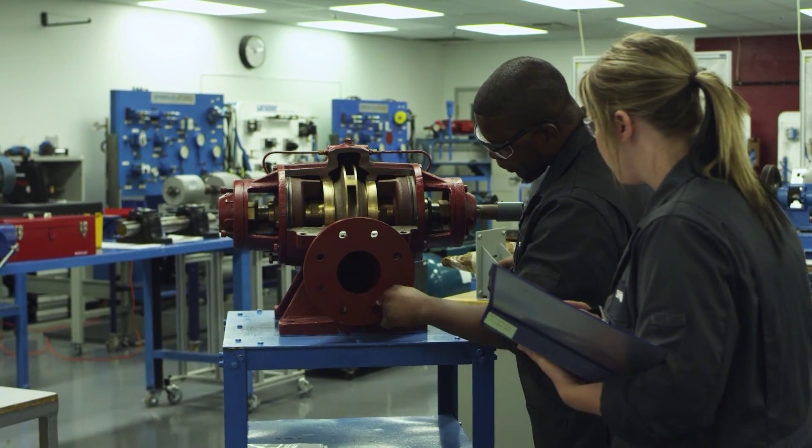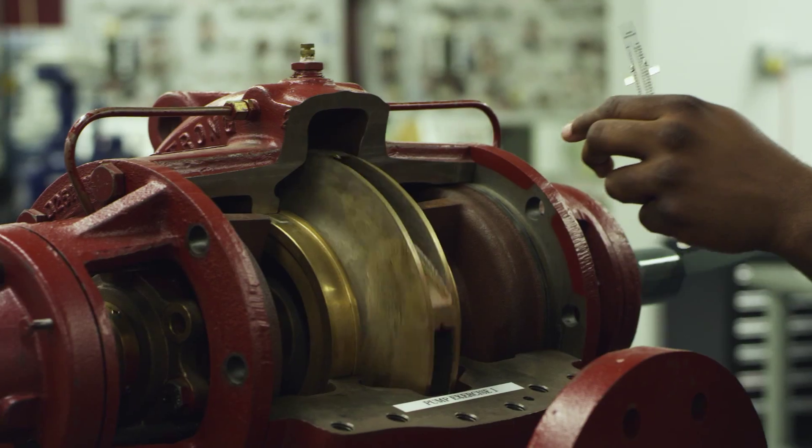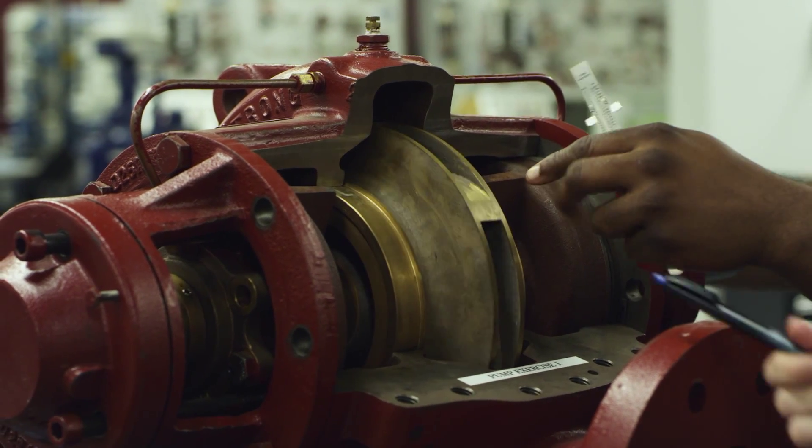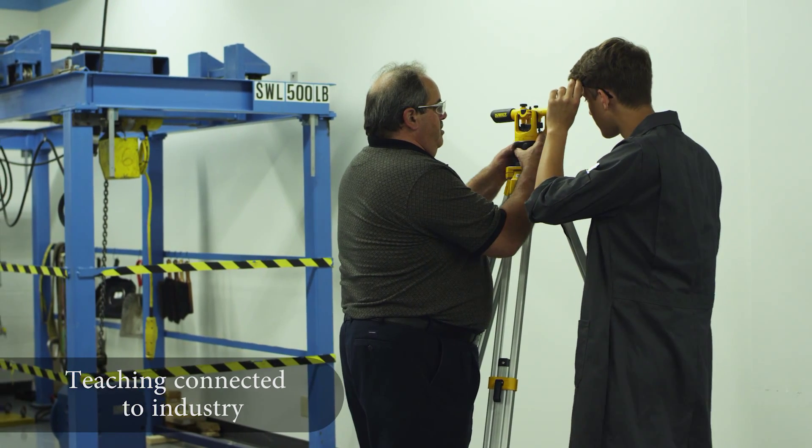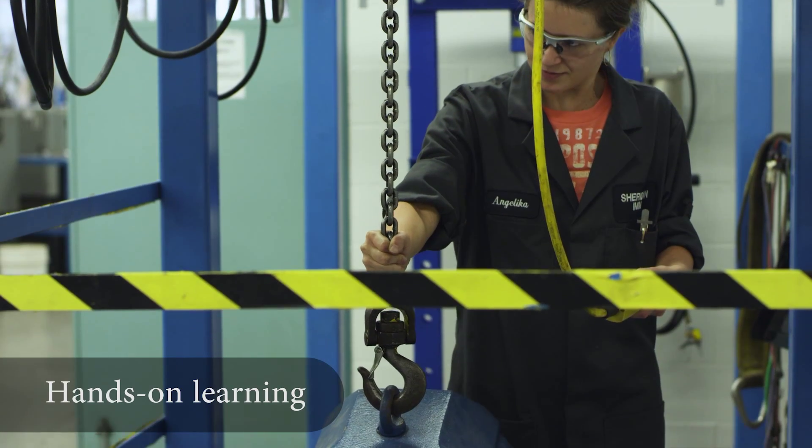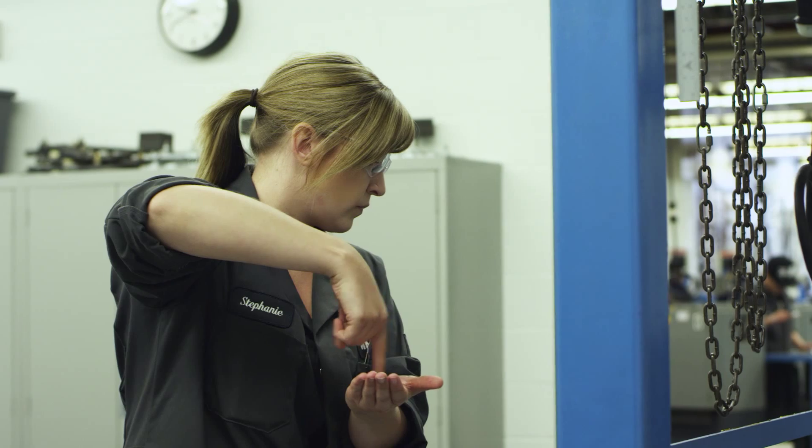At Sheridan, you'll learn in small groups, in state-of-the-art facilities with industry-specific technologies by professional, highly trained instructors. You'll get the skills and know-how to become an Industrial Mechanic Millwright apprentice and walk right into a job.